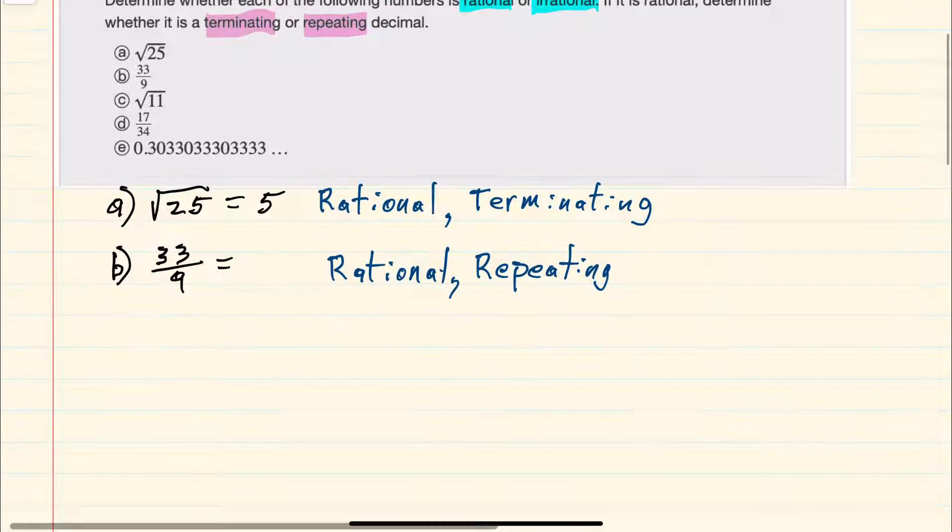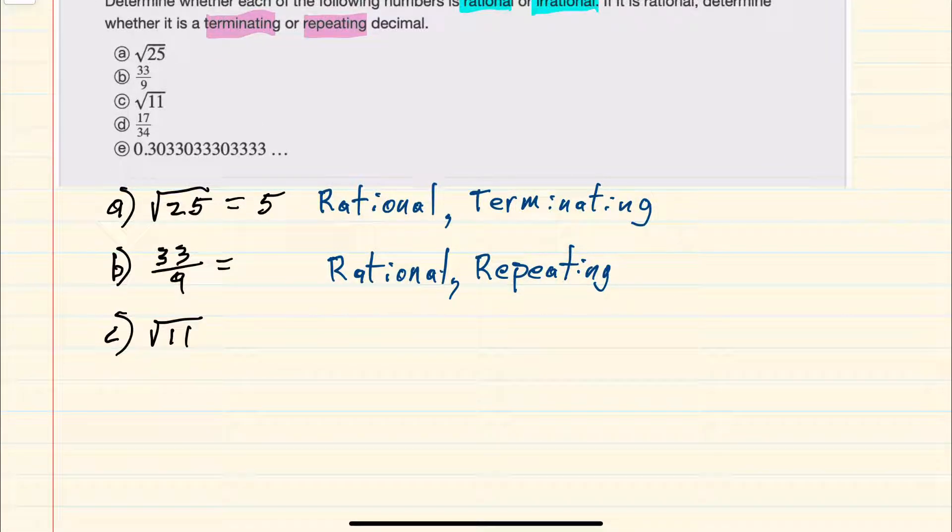Our next example is the square root of 11. Unlike a, this square root does not simplify since 11 is not a perfect square. So this example is irrational.